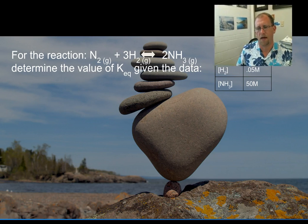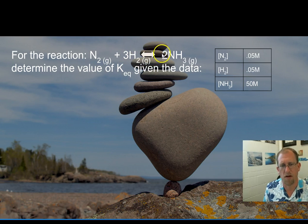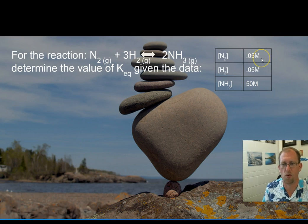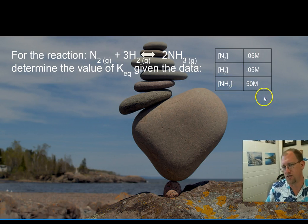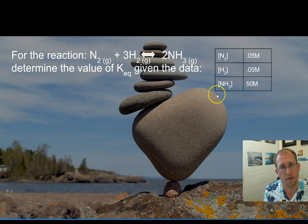Let's look at an example. For the reaction: nitrogen gas plus three moles of hydrogen gas in equilibrium with ammonia as a gas, determine the value of Keq given the following data. We let the reaction go and at equilibrium we sample the system and find 0.05 molar concentration of nitrogen gas, 0.05 molar concentration of hydrogen gas, and a 50 molar concentration of ammonia. You can see just from this that the reaction very much favors the forward reaction because at equilibrium there's a whole truckload of the product and just a little bit of the reactants.